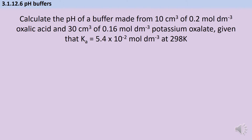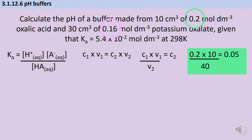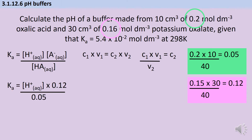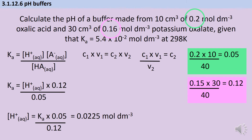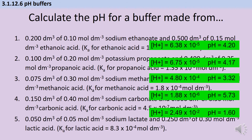For the practice question, the first step was to write an expression for Ka, then work out new concentrations for both the oxalic acid and potassium oxalate using C₁V₁ = C₂V₂. That gives a new acid concentration of 0.05 and a new salt concentration of 0.12. Substituting those into the Ka equation and rearranging gives [H⁺] = 0.0225 and a pH of 1.65. Here are five more practice questions — pause and the answers will be on the next slide.